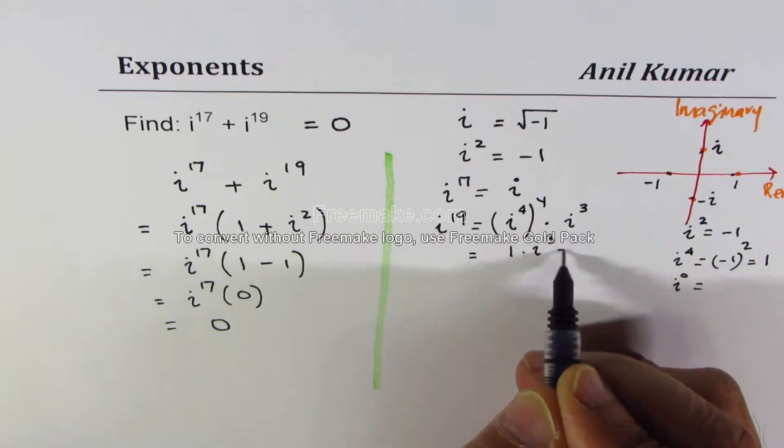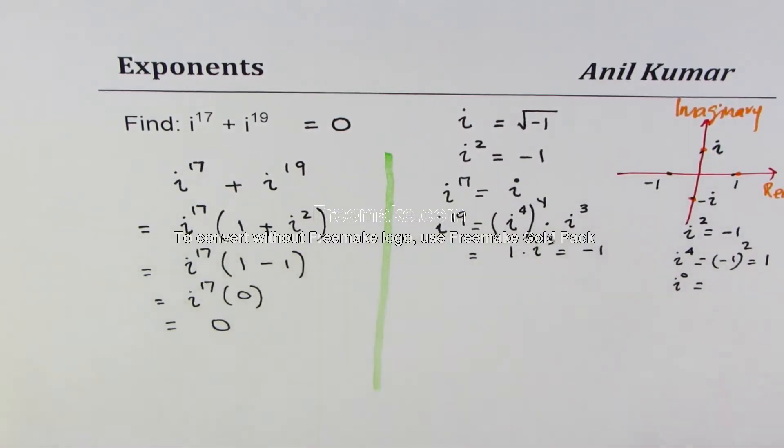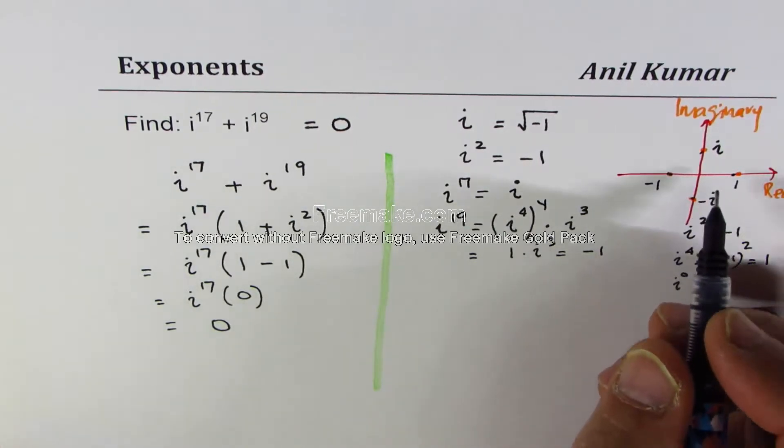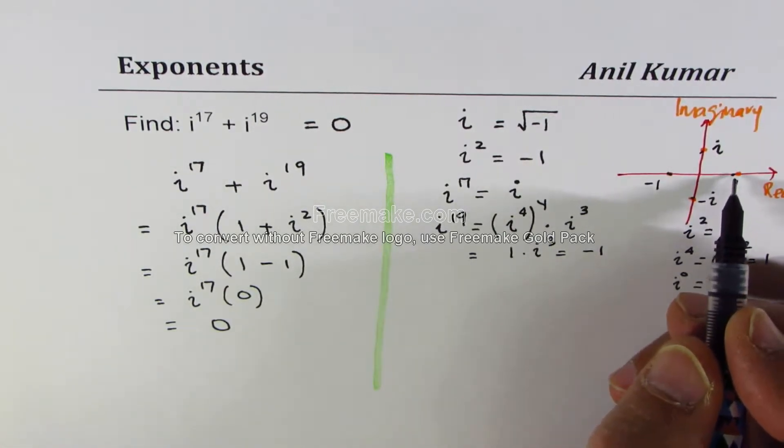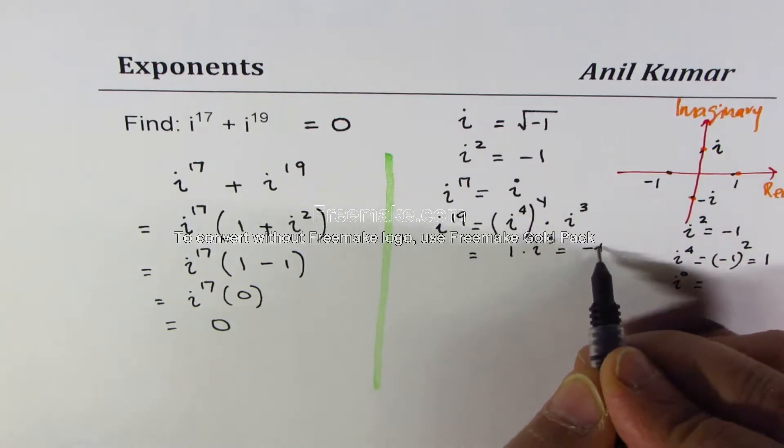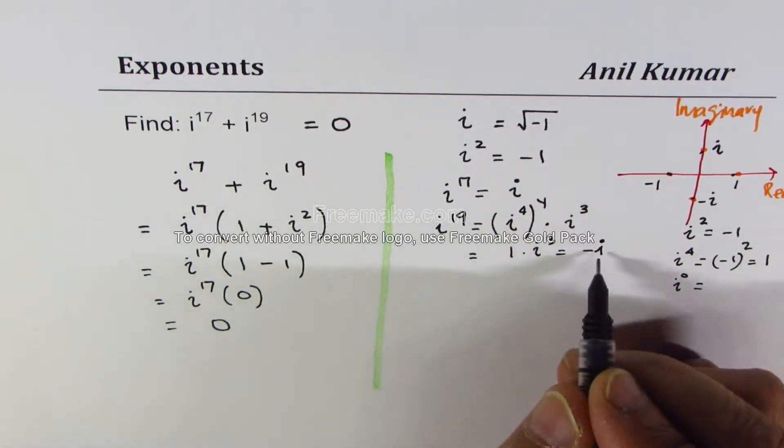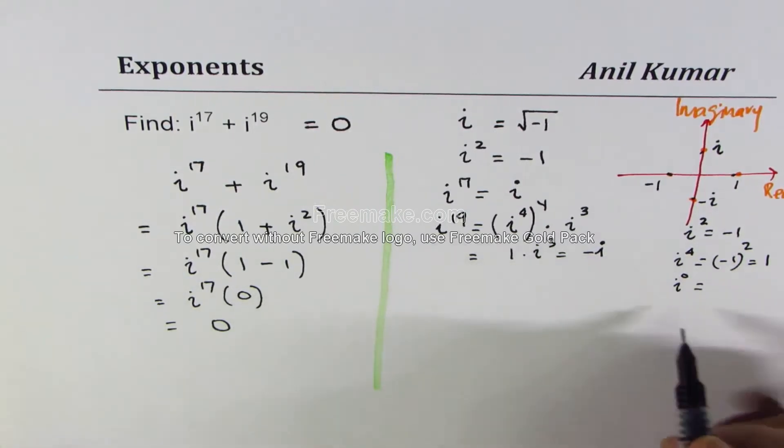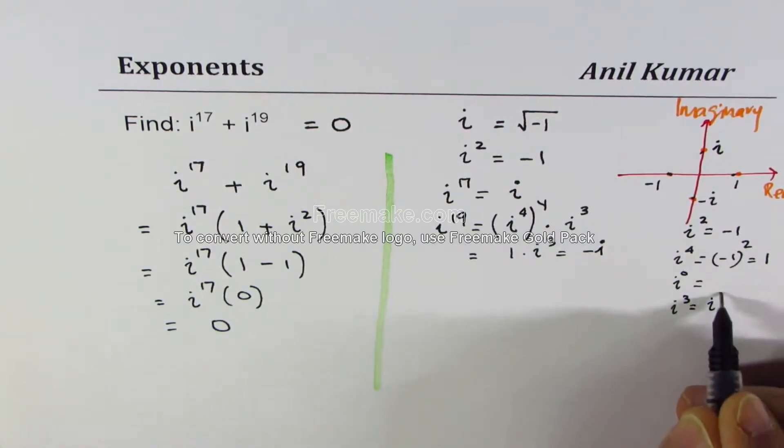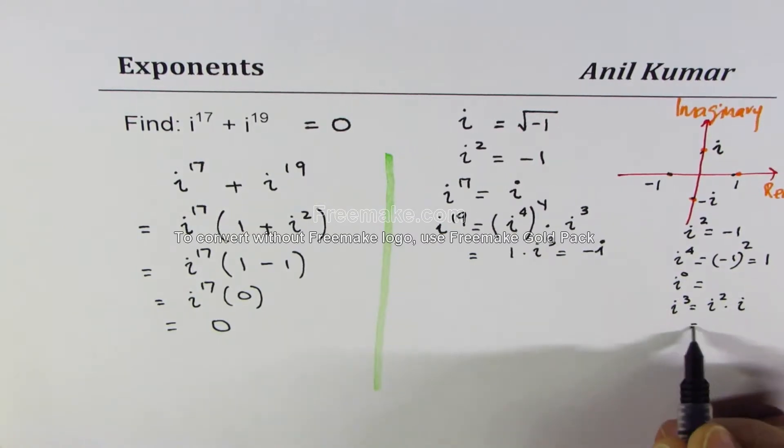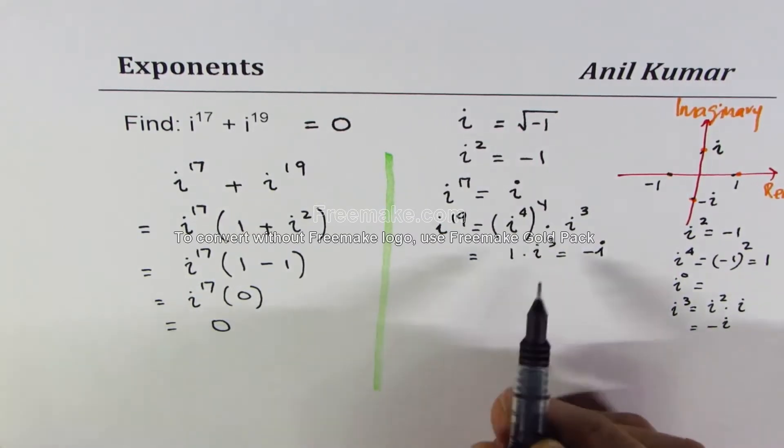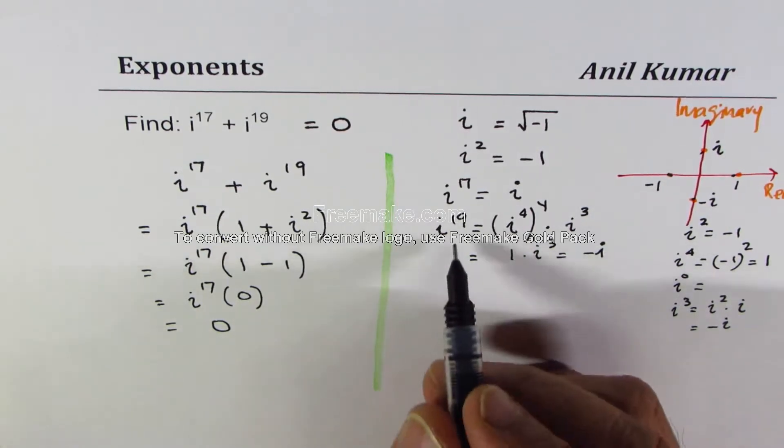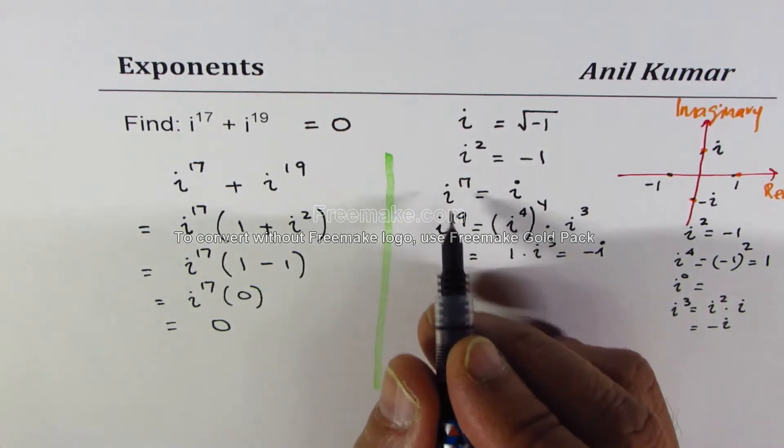And that is this portion is 1, so 1 times i cube. And i cube is minus i. That is how you could do it. See i cube means i square times i which is minus i. So i cube is minus i, these are all known facts.